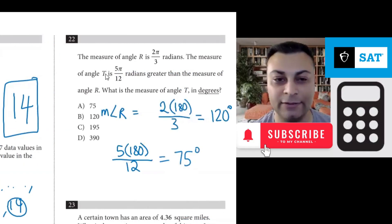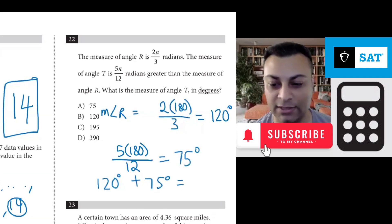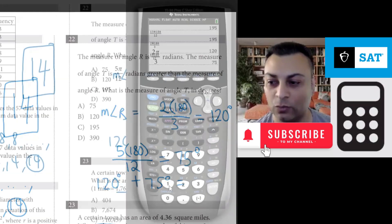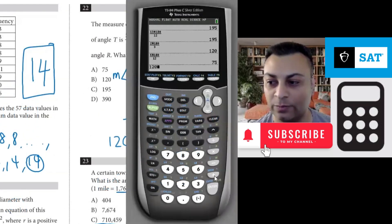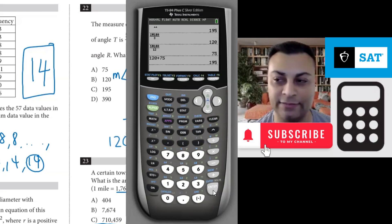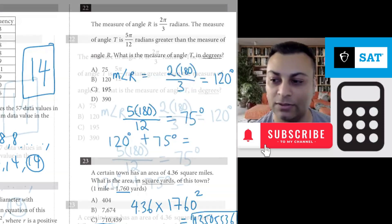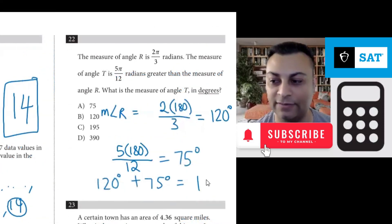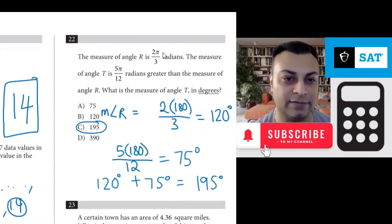That is, angle t is 75 degrees more than 120. So the final step would still be 120 degrees plus 75 degrees. And you would get, let's use the calculator again, 120 plus 75, 195. So 195 degrees. And that is option C. And that's doing the entire problem with degrees from the very beginning.